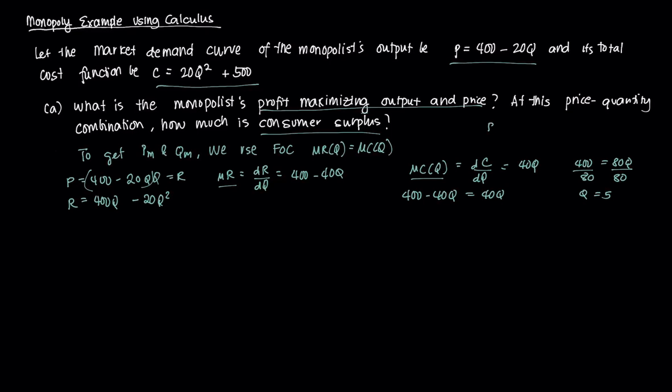We get p = 400 - 20 times 5, so that's 20 times 5, and we get p = 300. So the price that the monopolist will charge is 300 and the quantity that will be produced is 5 in this case.